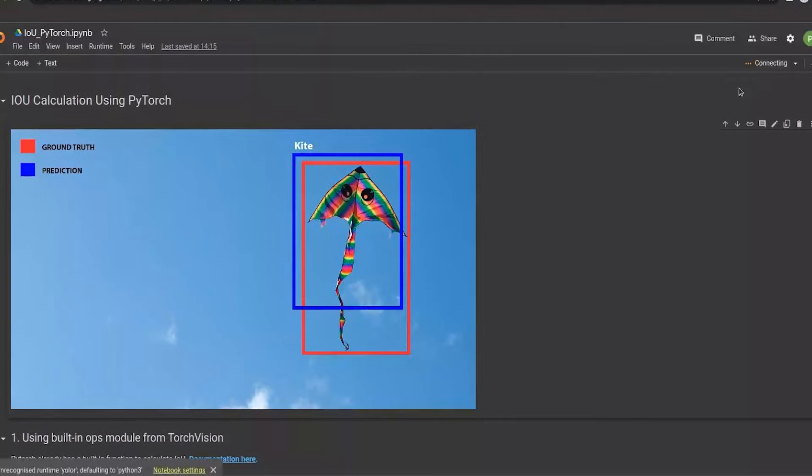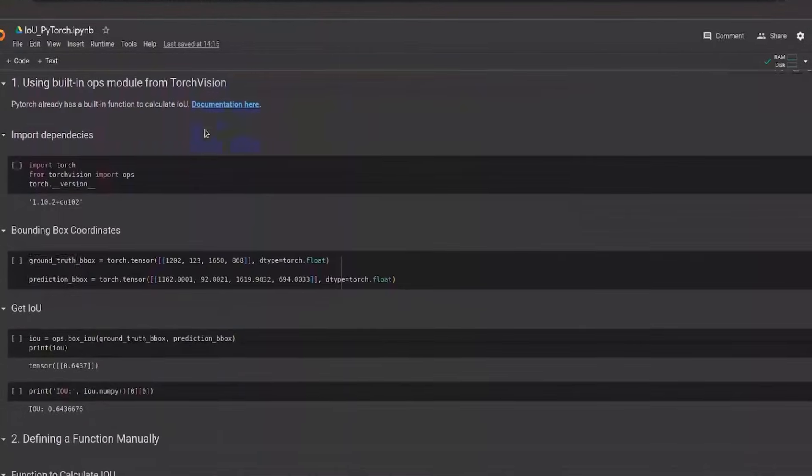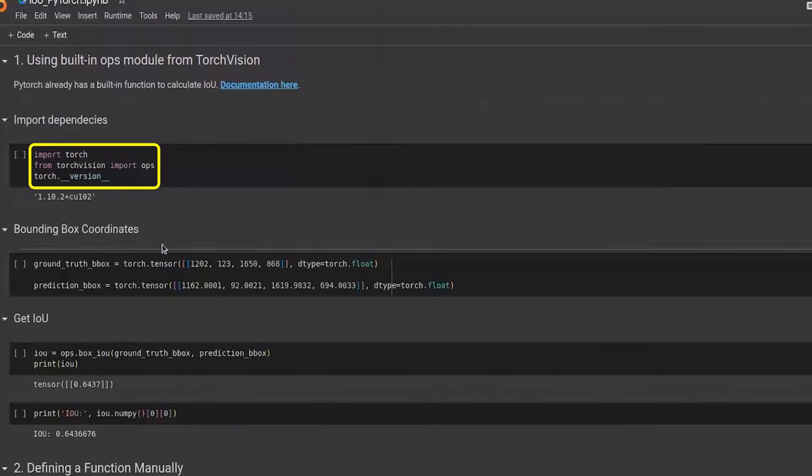Let's quickly hop on to a Google Colab notebook. PyTorch has an inbuilt functionality that allows it to compute IoU values. Initially, the necessary packages such as PyTorch and TorchVision are imported.